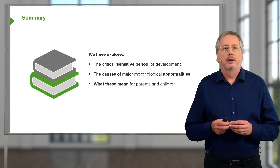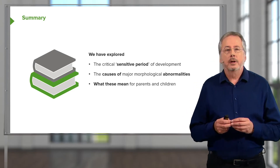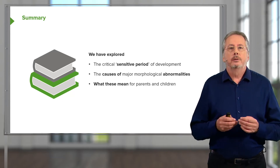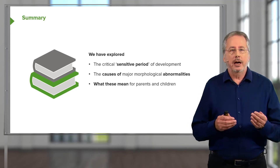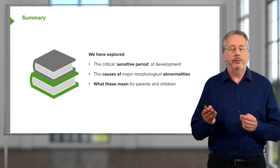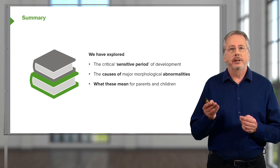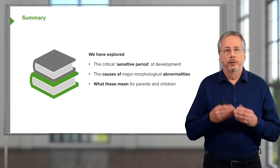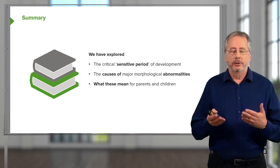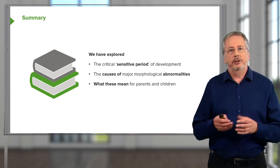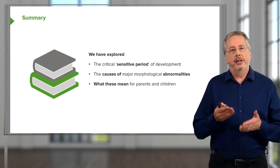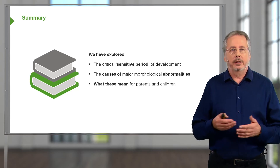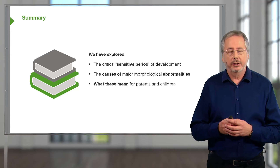In summary, we've looked at the three main stages of development — the pre-embryo, the embryo, and the fetus — and identified the embryonic period from two and a half weeks to the end of the eighth week after fertilization as the sensitive period where major abnormalities of body systems are detectable. We've looked at the causes which might underlie that, accepting that we still have very much to learn. And we've looked at the implications for parents, children, and medical practitioners of knowing that a developmental abnormality is present in a developing baby. Thank you very much.